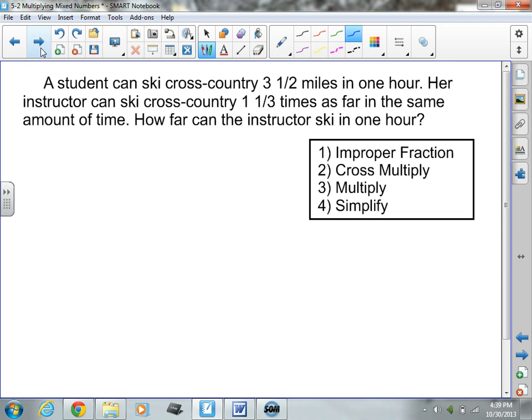All right. Last thing for tonight. See? Short and quick. I like that. Word problem. You know how I love these and love applying these to real life. So, the word problem says, a student can ski cross-country 3 and 1/2 miles in 1 hour. Her instructor can ski cross-country 1 and 1/3 times as far in the same amount of time. How far can the instructor ski in 1 hour? So, now I have a simple multiplication question. Do you see, right here, the word times? That's a key word for multiply. So, we're going to be multiplying here. So, let's multiply these. So, it's going to be 3 and 1/2 times 1 and 1/3. Those are where I'm going to be multiplying. These are my key words. So, now I go back to my method right here. First step, make it an improper fraction. So, 3 times 2 is 6, plus 1 is 7/2. 1 times 3 is 3, plus 1 is 4.